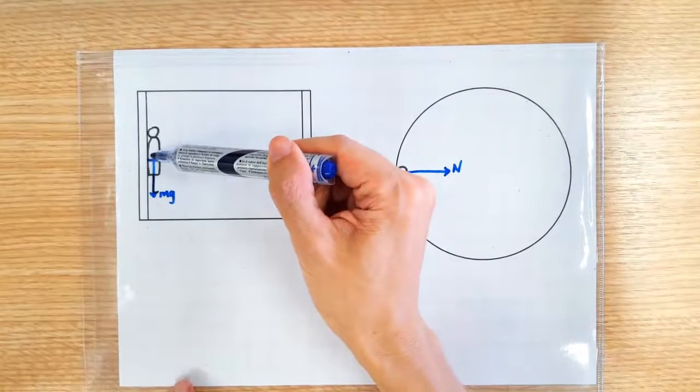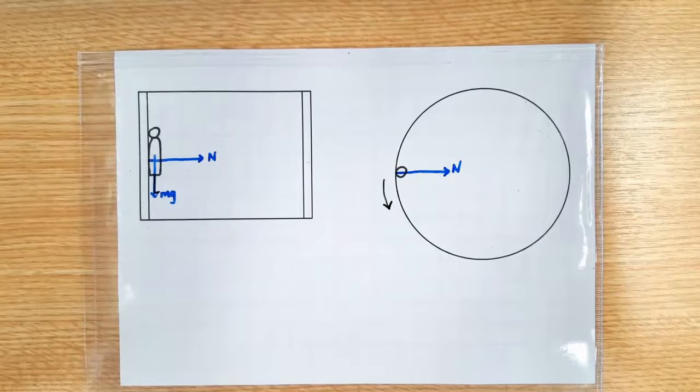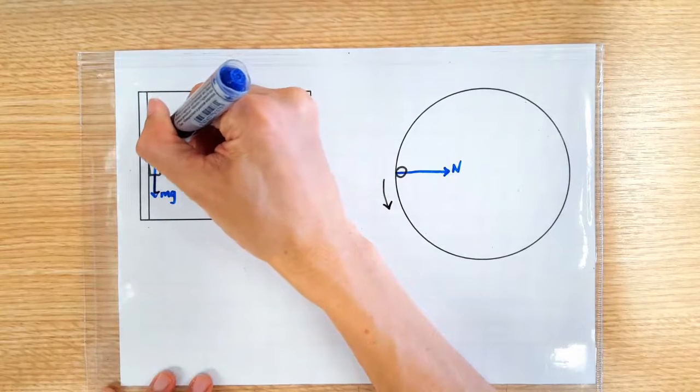But what is the force that is balancing the downward weight? It can only be the frictional force, right?